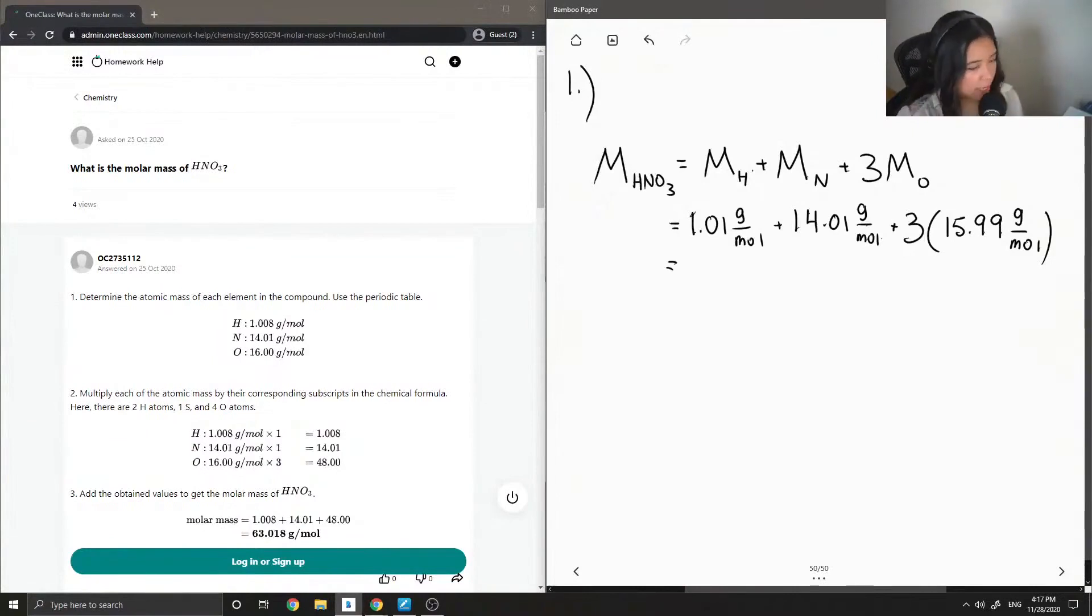So now we're just going to add all these values up, and we'll get a final molar mass of 63.02 grams per mole.